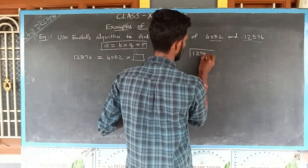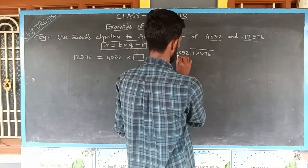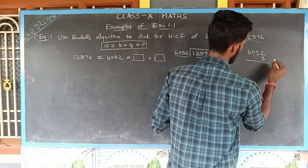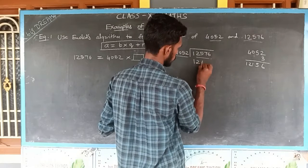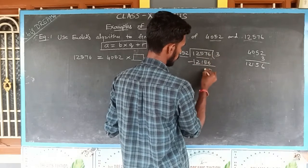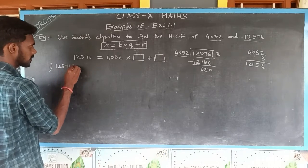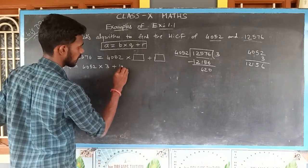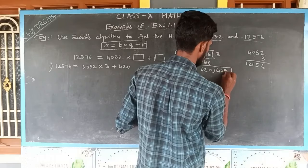I am dividing 12576 by 4052. Multiplying 4052 by 3, we get 12156. So the quotient is 3. Subtracting, I am getting 420 as the remainder. So in the first step I can write: 12576 = 4052 × 3 + 420. In the next step, 420 becomes the divisor and 4052 becomes the dividend.